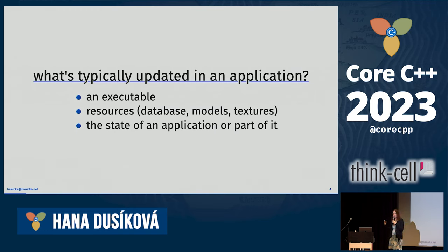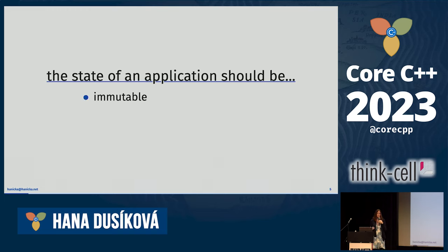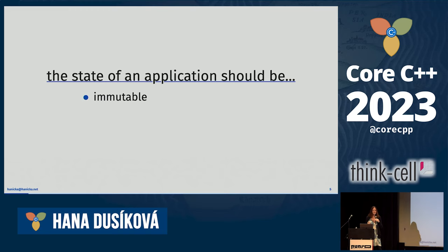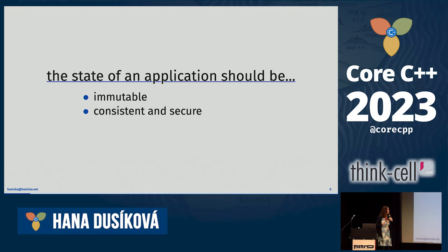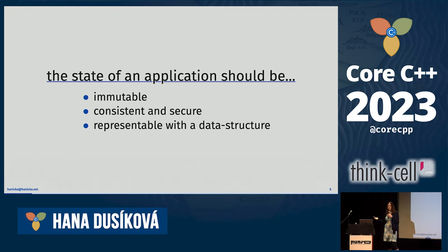Generally it's the state of the application you want to update. The state should be immutable — it shouldn't change based on the input. The state is immutable and it should be consistent and secure, so whenever something is damaged, you should detect it. Also, every state is representable as a data structure — maybe just a vector of bytes or some sort of map.